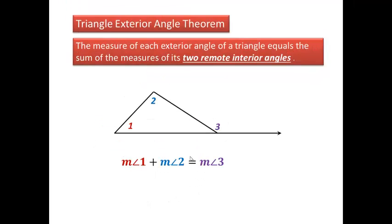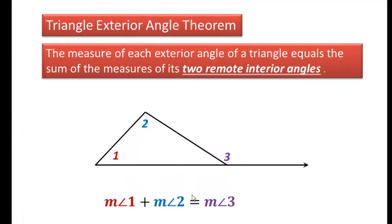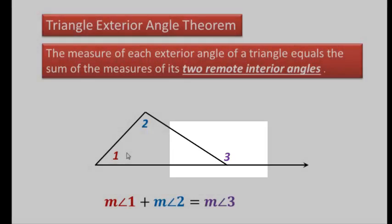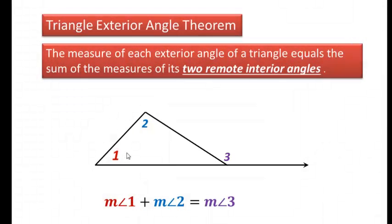Let's talk about the triangle exterior angle theorem, and it says the measure of each exterior angle, so in this diagram here, angle three is an exterior angle, equals the sum of the measures of its two remote interior angles.